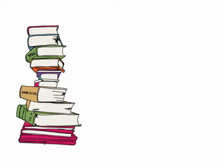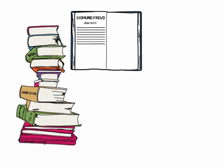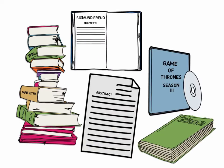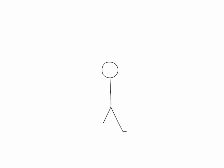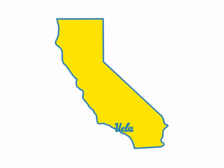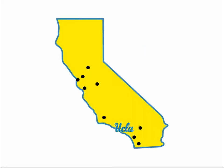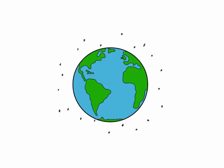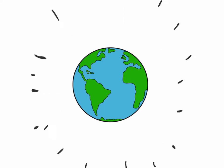First, we should discuss what the Melville Catalog is. As a UCLA student, if you are looking for books, articles, media, or newspapers, you can either search for them within the UCLA Library Catalog or Melville. Melville is the catalog that all of the UC campuses, as well as many other libraries around the world, use. Searching through this catalog opens up your research to more sources that, while not physically available at UCLA, are only a few clicks away from being transferred here.